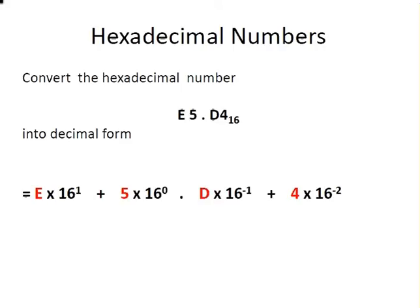The first thing we're going to do is split it up a bit and put in some space. So I have E by 16 to the power of 1 plus 5 times 16 to the power of 0. I have that radix point there—commonly called a decimal point, but correctly called a radix point when dealing with other number systems. D by 16 to the minus 1 plus 4 by 16 to the minus 2.